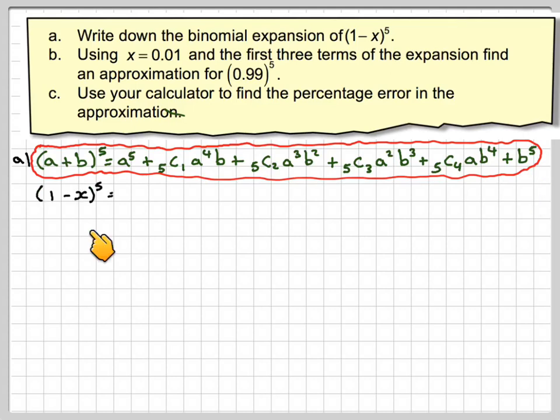So 1 minus x to the power of 5 means that a is 1 and b is minus x. So we've got 1 to the 5 plus 5, 5c1 is 5, 1 to the 4 minus x plus 10, 5c2 is 10, 1 cubed times minus x squared. Make sure we put the minus set into brackets.